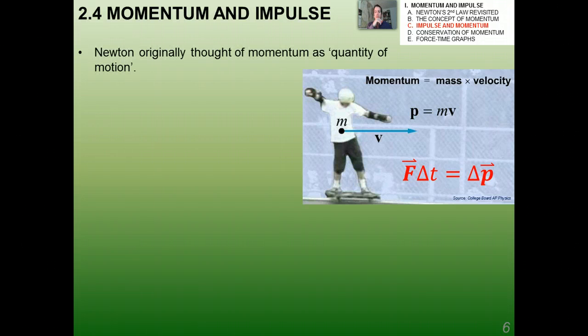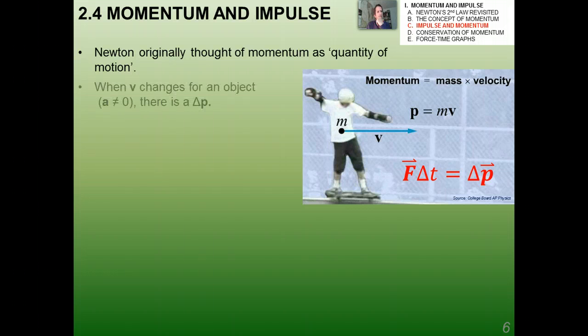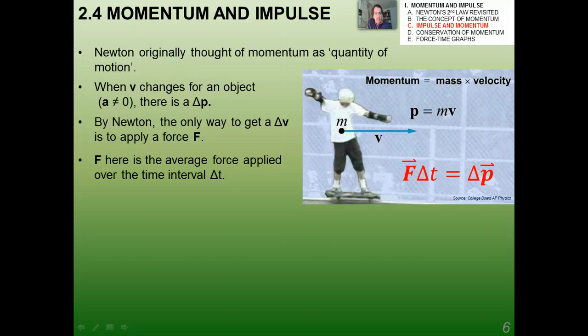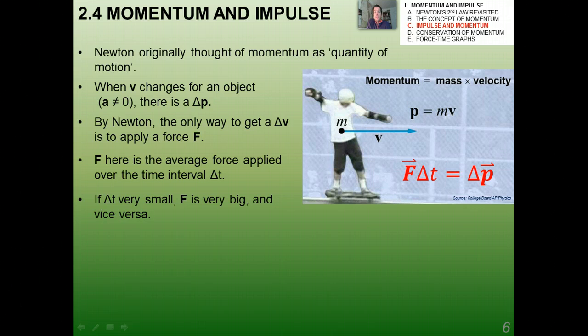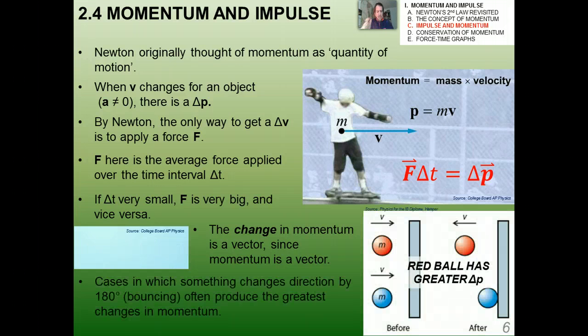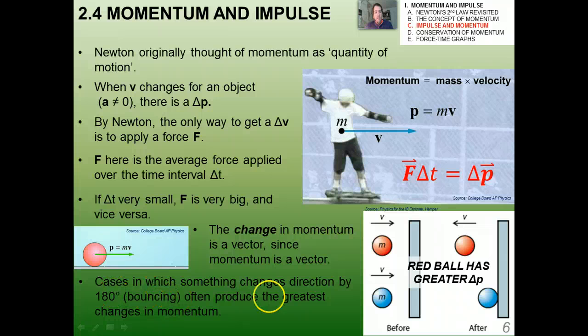Just a couple other things about momentum that are really important for you to understand. Newton originally didn't come up with the term momentum. He thought of the quantity of mass times velocity as being what he called the quantity of motion, which actually is a pretty cool name. Obviously when the velocity changes for an object, there's always a change in momentum. Remember, velocity can change by direction and not speed. By Newton, the only way to get a change in velocity is to apply a force F. So the force here is the average force applied over the time interval. If the change in time is very small, the force can be very big, and vice versa. The change in momentum is a vector since momentum is a vector. The cases in which something changes direction by 180 degrees or bouncing often produce the greatest changes in momentum because the change in momentum is a vector.